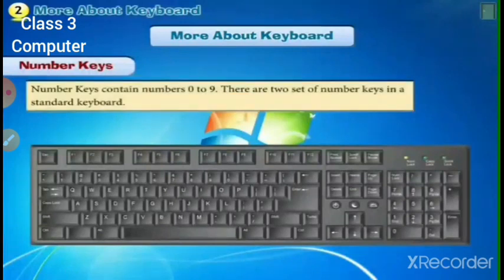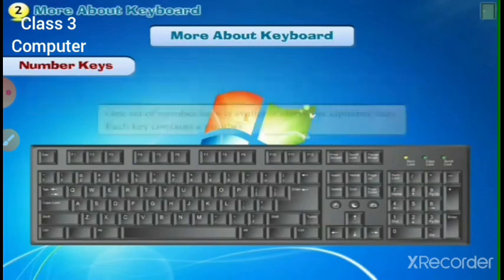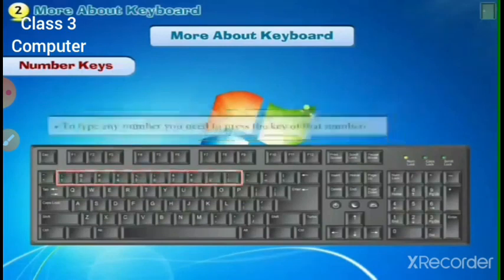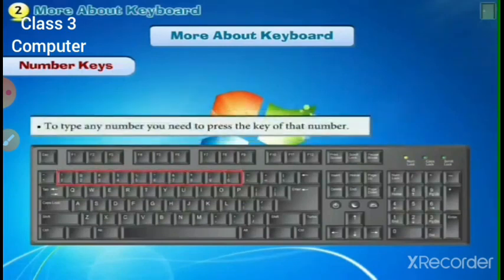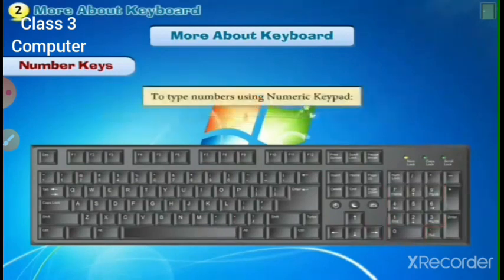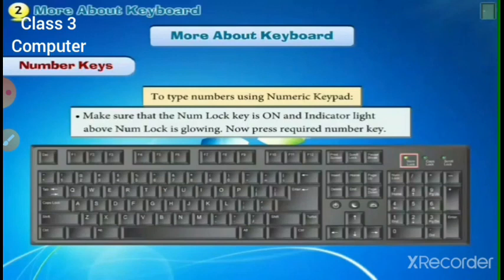Number keys contain numbers 0 to 9. There are two sets of number keys in a standard keyboard. One set is available above the alphabet keys — each key contains a number and you can type by pressing that key. The other set on the right-hand side of the keyboard is known as the numeric keypad. To type numbers using the numeric keypad, make sure the Num Lock key is on and the indicator light above Num Lock is glowing, then press the required number keys.